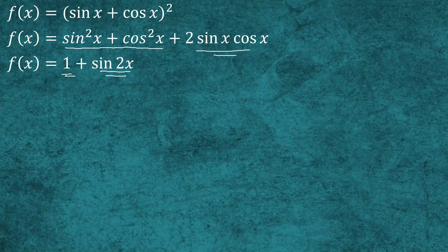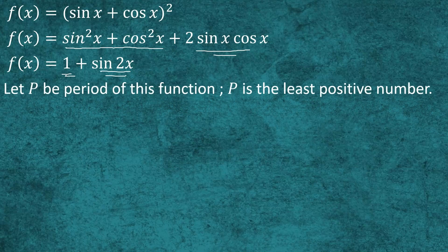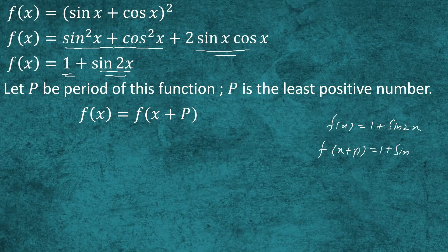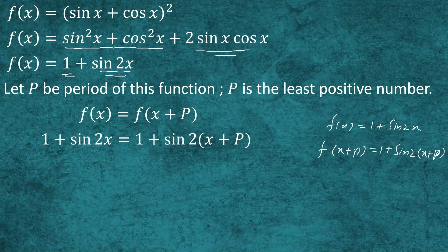Now we apply the least period definition to this function. Suppose p is the period of this function where p is the least positive number. Then by definition, f(x) = f(x + p). Since f(x) = 1 + sin 2x, then f(x + p) = 1 + sin(2(x + p)). So the equation becomes 1 + sin 2x = 1 + sin(2x + 2p). Cancelling 1 from both sides gives sin 2x = sin(2x + 2p).